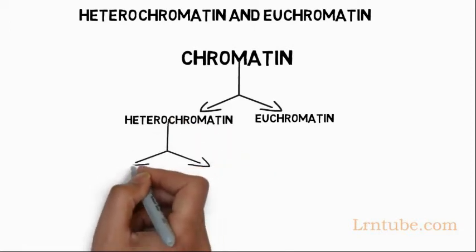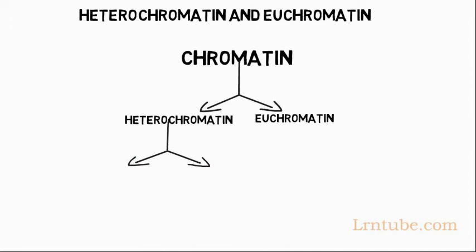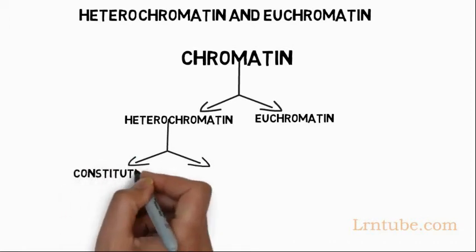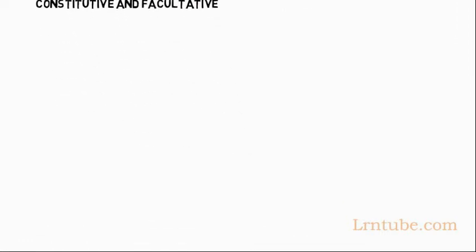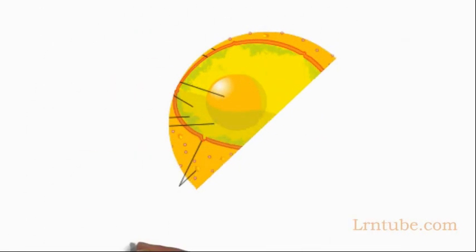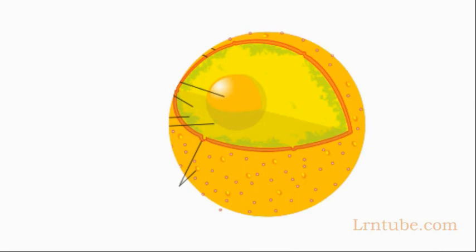Heterochromatin is further divided into two subcategories, i.e. constitutive and facultative heterochromatin. Heterochromatin and euchromatin are defined by specific histone modifications.